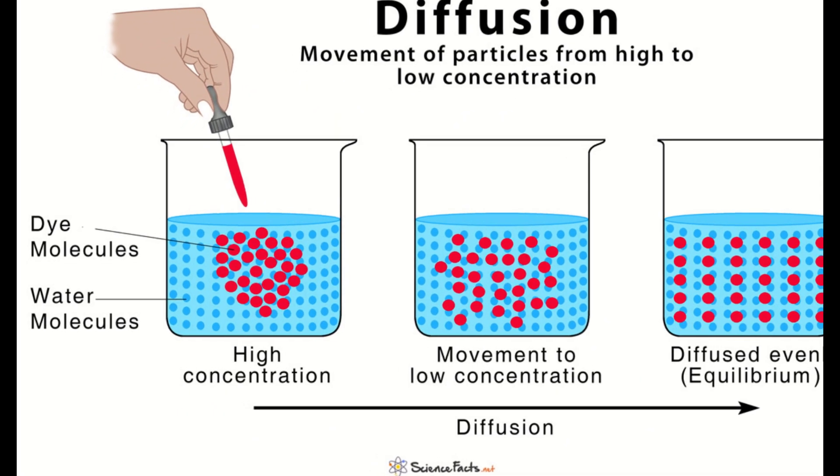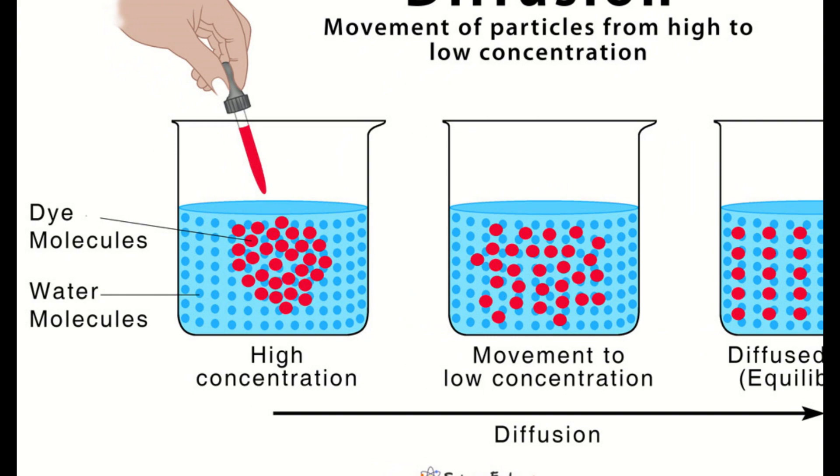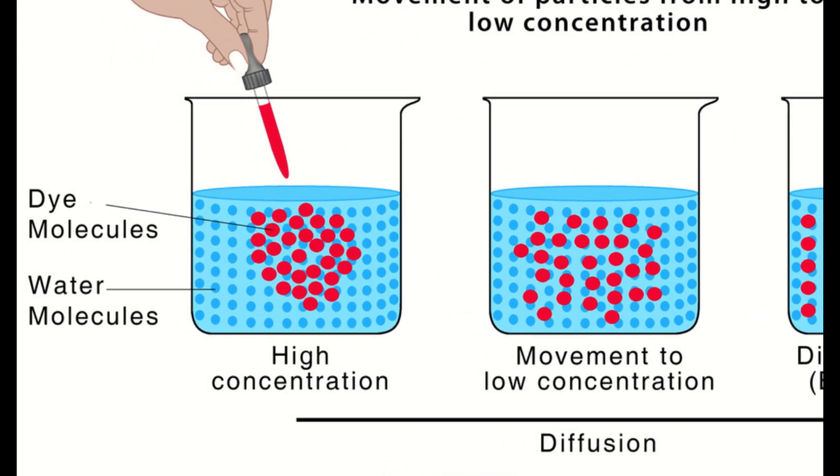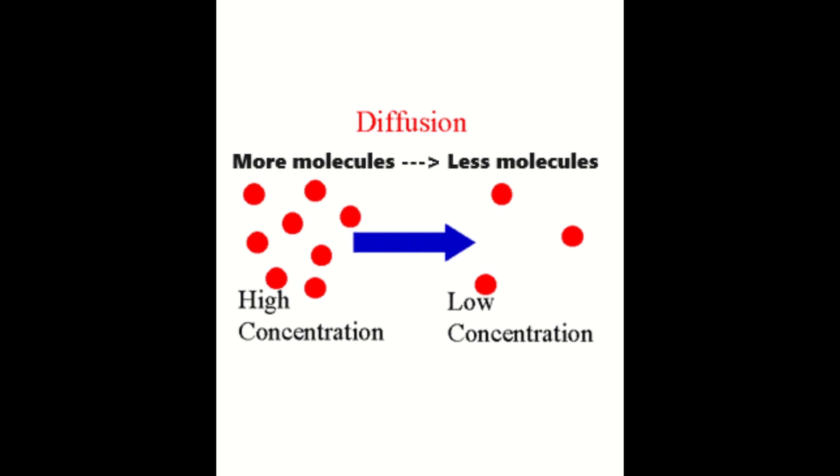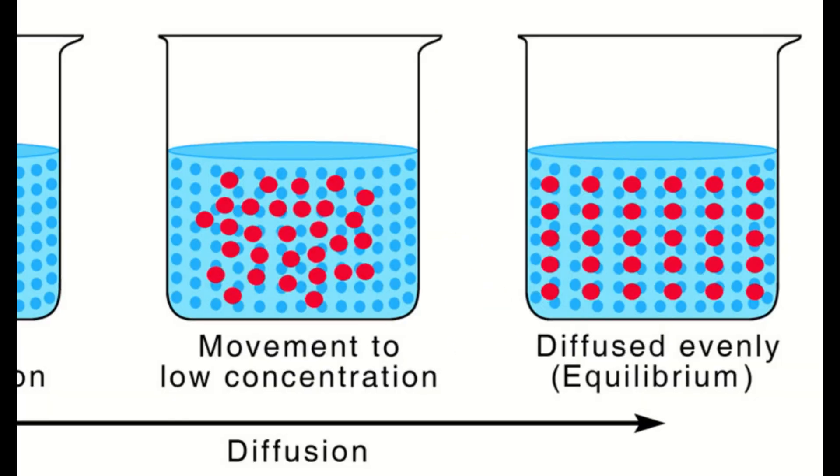Diffusion is the movement of solutes such as sugars and salts as well as gases from a region of high concentration to low concentration. In other words, molecules move from where there's more to where there's less until they are evenly spread out.